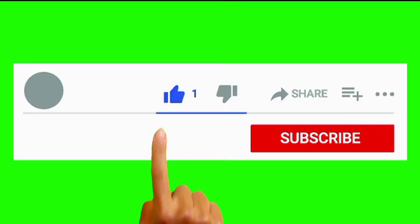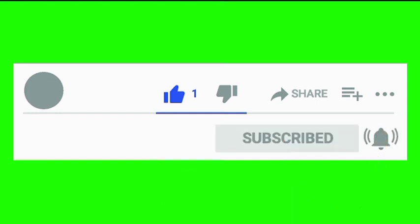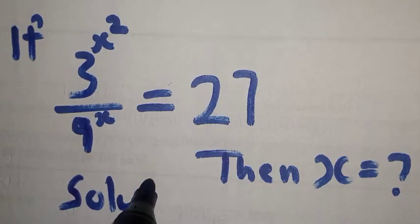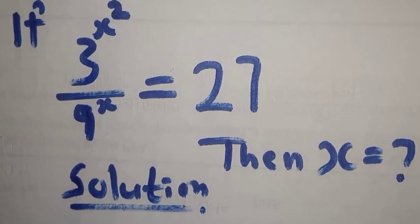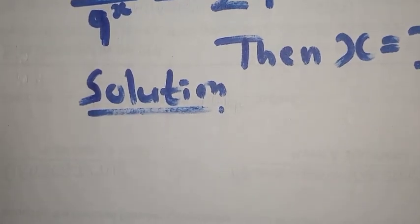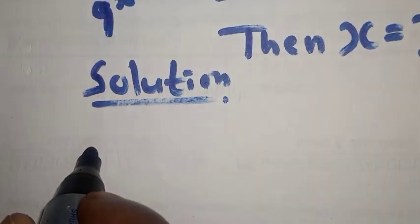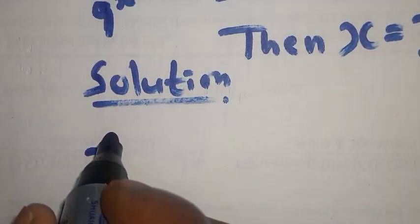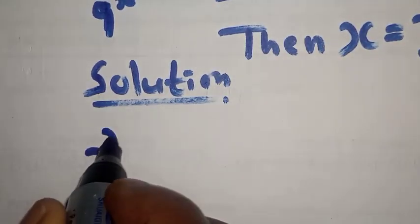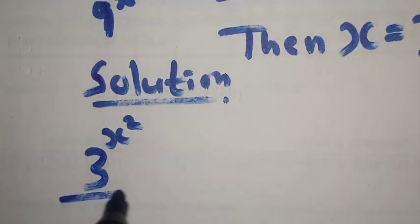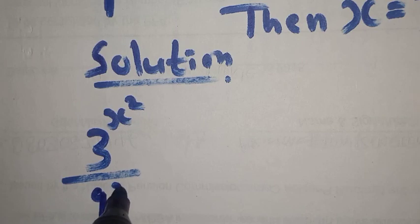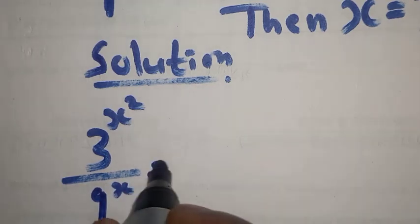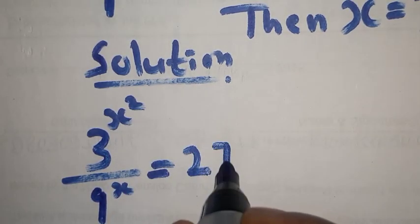Please don't forget to like, share, comment and subscribe. Solution: we have 3 raised to power s squared over 9 raised to power s equal to 27.